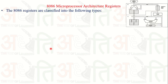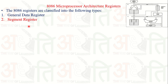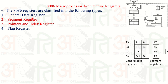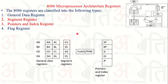It contains mainly four types of registers: general data registers, segment registers, pointer and index registers, and the flag register. We have already discussed the general data registers in our previous video. Today we will look at the segment registers and the pointer and index registers.